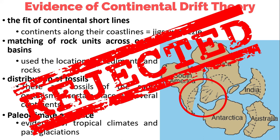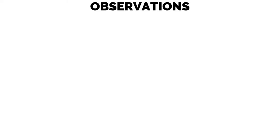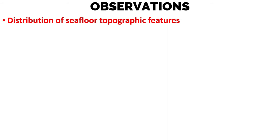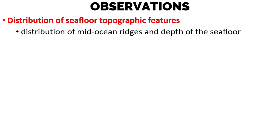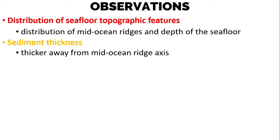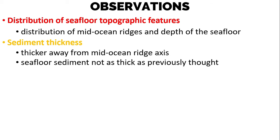The continents were once joined but are now separated. This implies that something had to come between the continents for them to move apart — and that is the seafloor. There are observations and evidences that led to the hypothesis of seafloor spreading. First is the distribution of seafloor topographic features, including mid-ocean ridges and depth of the seafloor. Next, sediment thickness: a fine layer of sediment covering much of the seafloor becomes progressively thicker away from the mid-ocean ridge axis, meaning seafloor sediment is not as thick as previously thought.